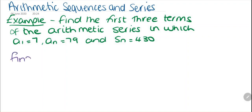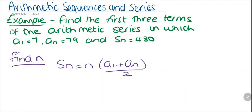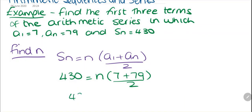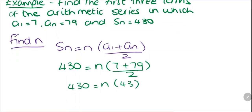We don't know how many terms, so we're going to use the formula for the sum: Sn = n(a1 + an) / 2. Substituting in the values we know: 430 is the sum, n is unknown, a1 is 7, and the last term is 79, divided by 2. So 430 is equal to n multiplied by 43.